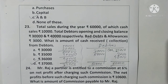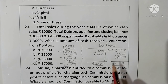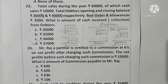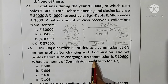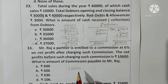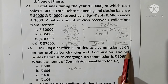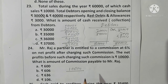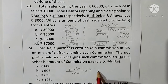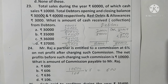Question 24: Mr. Raj, a partner, is entitled to commission at 6% on net profit after charging such commission. Net profit before charging commission is rupees 10,600. Commission is calculated as 10,600 × 6/106 = rupees 600. Option A is correct.